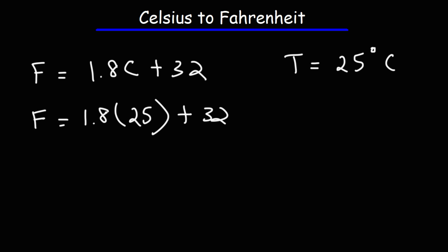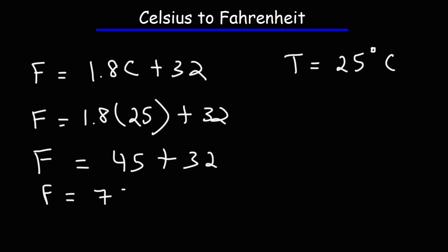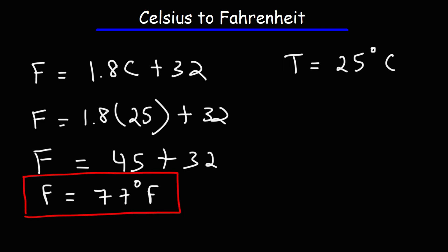1.8 times 25 is 45. And then 45 plus 32 is 77. So the Fahrenheit temperature is 77 degrees Fahrenheit. That's how you can convert the temperature from Celsius to Fahrenheit.